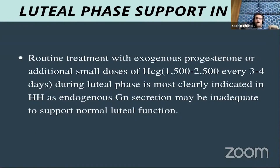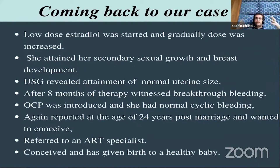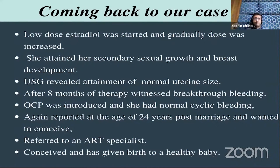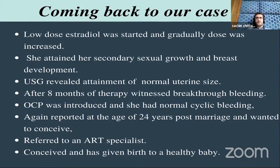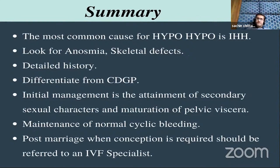Coming back to our case: low-dose estradiol was started and gradually the dose was increased. She attained secondary sexual growth and breast development. USG revealed attainment of normal uterine size — approximately 6 cm. After eight months of therapy, she had breakthrough bleeding, OCP was introduced, and she had normal cyclic bleeding. She reported again at age 24, post-marriage, wanting to conceive. She was referred to an ART specialist and has now conceived and given birth to a healthy baby. This is the outcome when hypogonadotropic hypogonadism — most likely idiopathic — is properly managed.